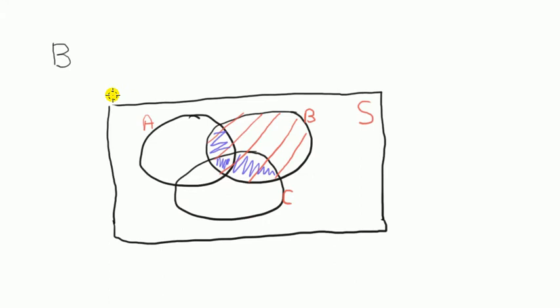It's useful here to draw a Venn diagram. So I've got the set A, B and C and they're contained in the sample space S.